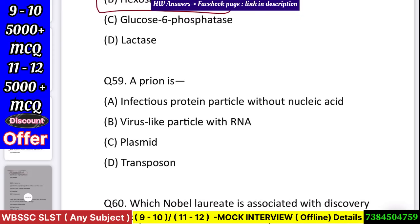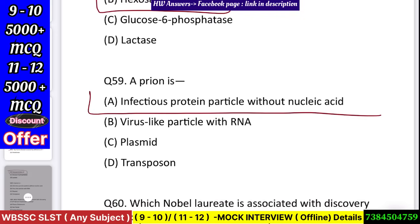Question number 60: A prion is — an infectious protein particle without nucleic acid, a virus-like particle with RNA, a plasmid, or a transposon? Answer: infectious protein particle without nucleic acid.